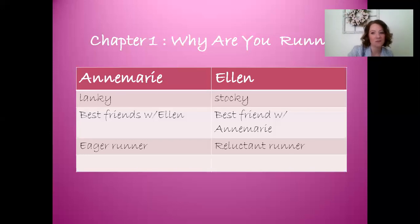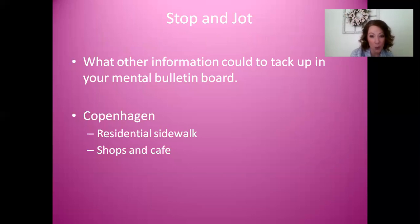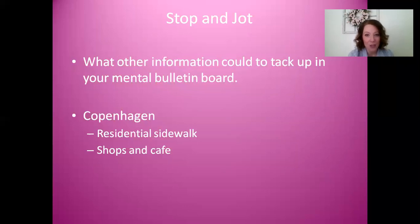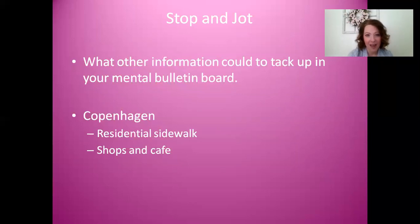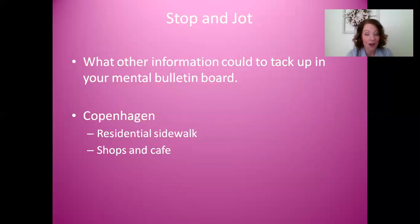I noticed something about the setting. I knew that Copenhagen was the name of a city, and it talked about the streets, the residential sidewalks, shops, and a cafe — so I'm making that mental picture along with notes of where the girls might be. I could also go back to my chart and add that Anne Marie has blonde hair, whereas Ellen has dark pigtails. I'm constantly thinking about what is going to be important for me to fit pieces together. Reading is like solving a puzzle — I sometimes challenge myself to see if I can figure out what's going to come next, like fitting the next big piece into the puzzle.